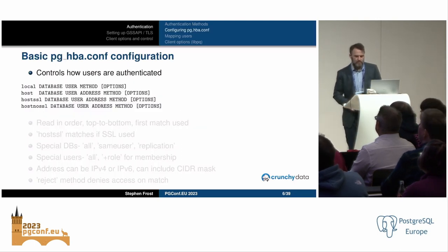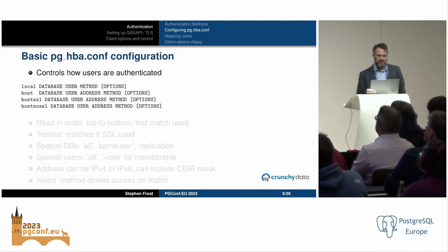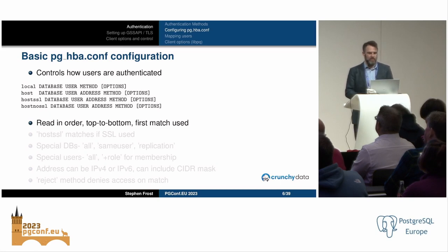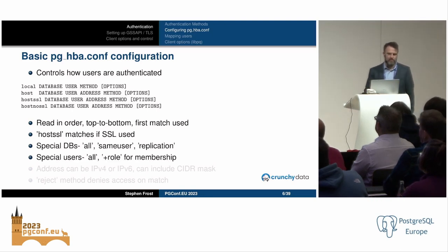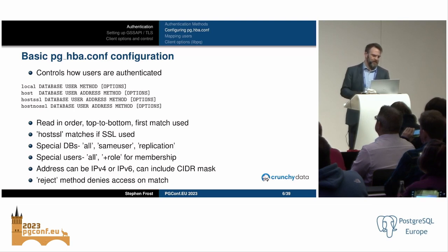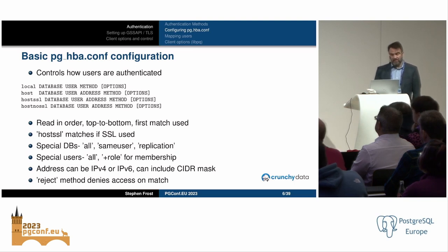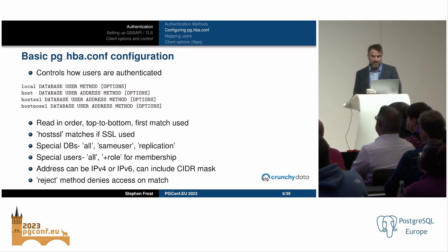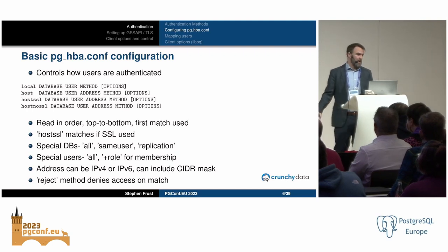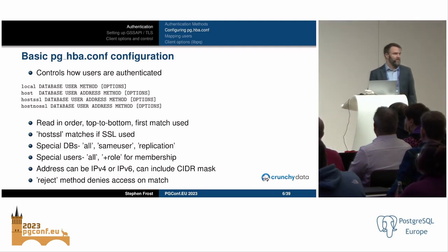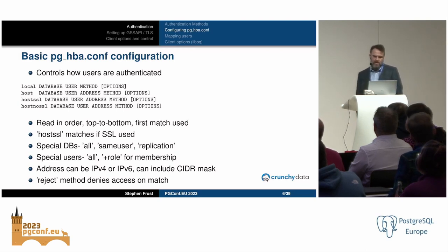A quick review of pg_hba: your basic pg_hba authentication configuration allows you to control authentication based on different options. It's read from top to bottom, the first match wins. hostssl matches if SSL is being used, there are special database and user names, and addresses can be specified with a CIDR mask. Advanced authentication includes some pg_hba features — not enough people use the reject method, which is really useful for carving out whole swaths of address space to immediately reject connections, minimizing risk.